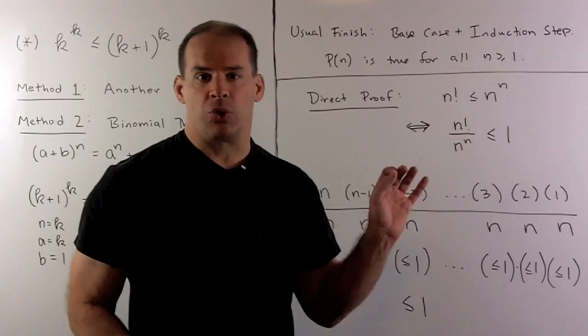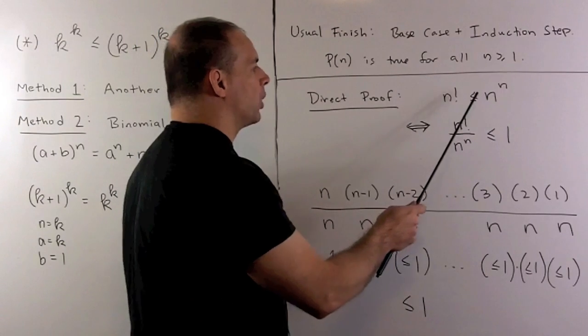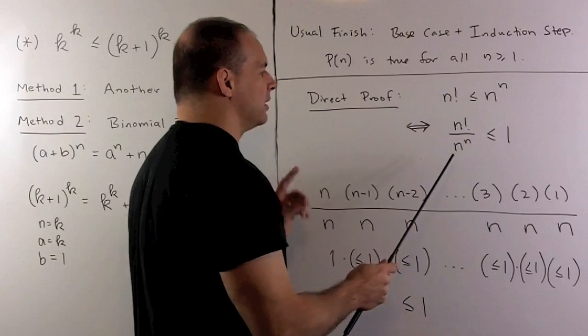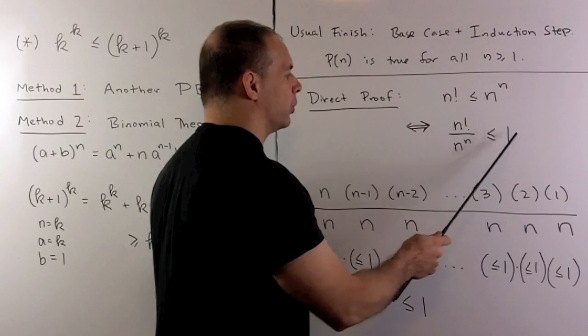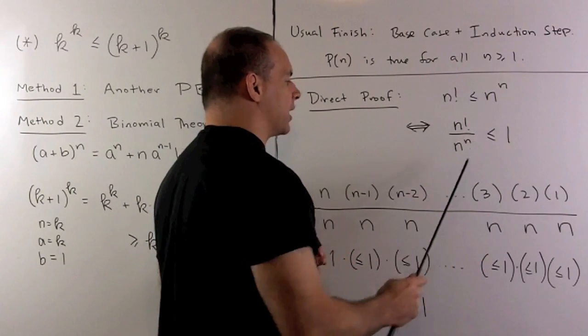Finally, we can see our statement directly. So what we would do here is, if we have n factorial less than or equal to n to the nth power, we can divide both sides by n to the nth power to get the equivalent statement, n factorial over n to the n is less than or equal to 1. To show this, I'll write out the definition of n factorial.